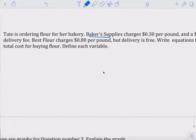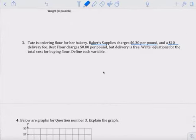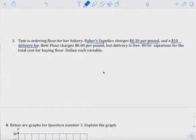Bakery supply charges $0.30 per pound and a $10 delivery fee. So, that's 30 cents, did I say $30? 30 cents per pound, so it's 0.3 dollars per pound.